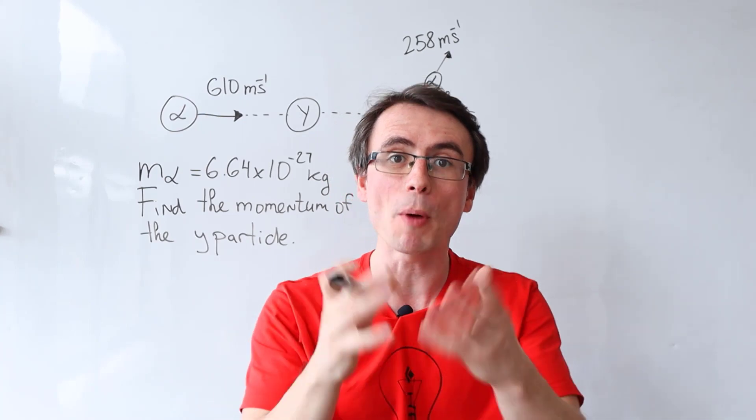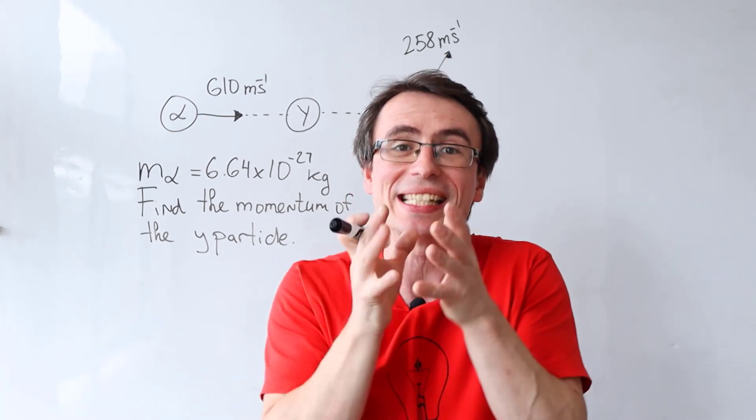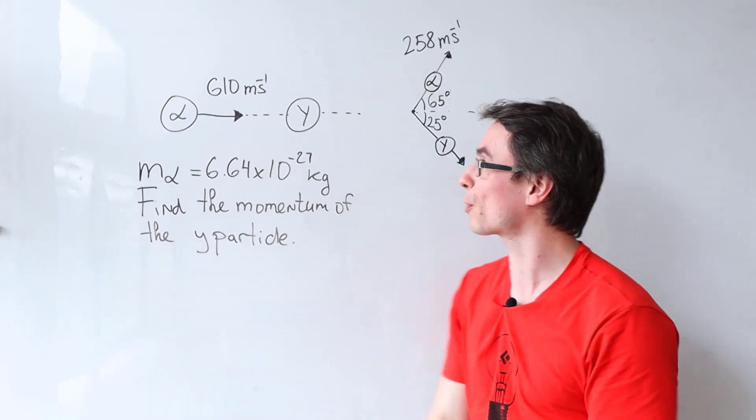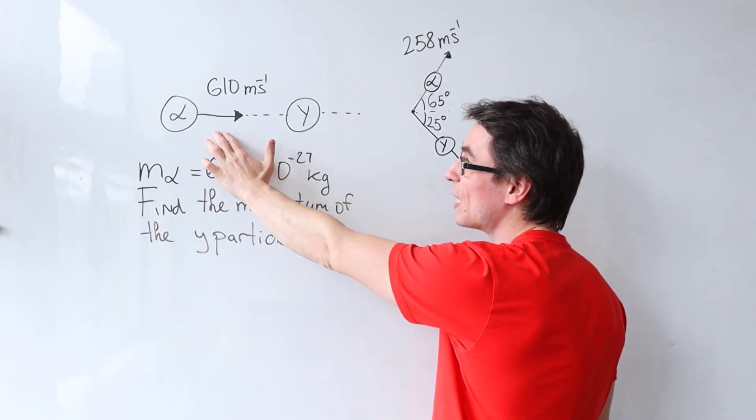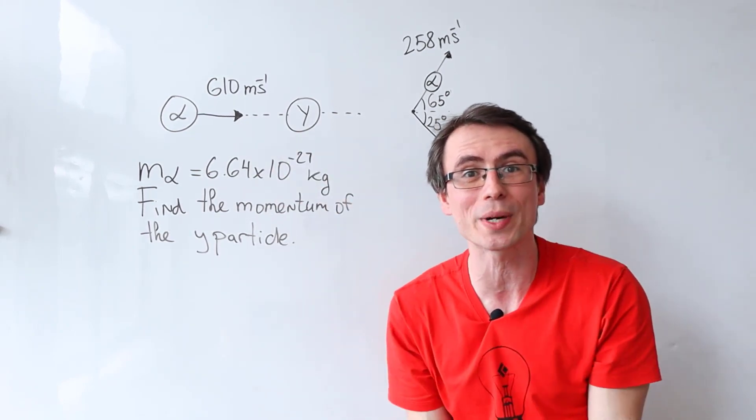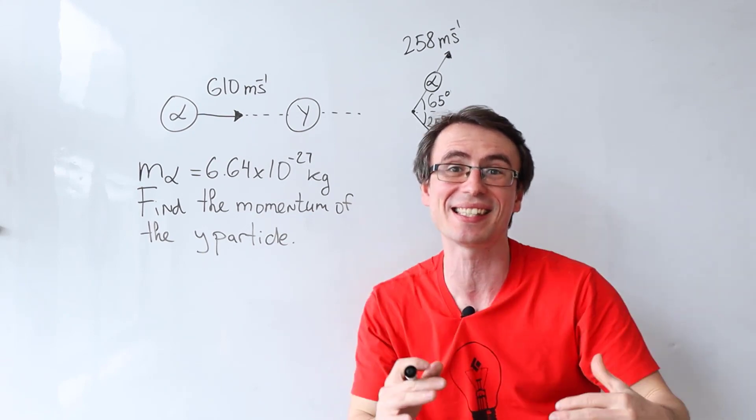It is crucial to remember that momentum is a vector quantity and it's conserved separately in each direction. The easiest way to tackle this problem is to notice that the initial momentum is purely horizontal, meaning that the initial y component of the momentum is zero.